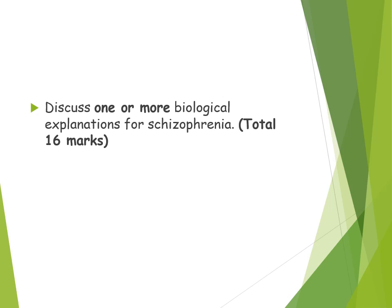Remember the command word 'discuss' means outline and evaluate. It should be obvious with a 16-marker that you need to include evaluation, but equally you could get an 8-marker on 'discuss neural correlates as an explanation of schizophrenia,' which also requires outline and evaluate. For 8 marks: one AO1 paragraph and two evaluation points. For a 16-marker: two AO1 paragraphs and three to four evaluation points.